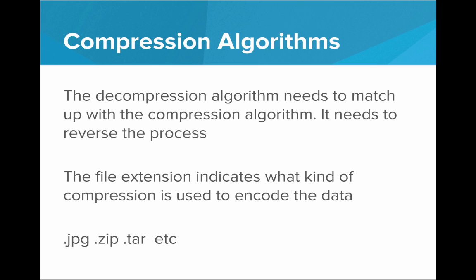Now one important thing is that the decompression algorithm used needs to match up with the compression algorithm used. It needs to reverse that process. So the way we keep track of this, the way we keep track of which algorithms we're using on which data, is with file extensions. So a given file extension tells the computer what algorithm to use to decompress the data. So .JPEG uses the JPEG compression algorithm. So when your computer sees a .JPEG, it knows that that file was compressed with the JPEG algorithm, so it will need to decompress that file with the same JPEG algorithm. So .JPEG, .zip, .tar—these are all examples of different compression algorithms that produce different file extensions.